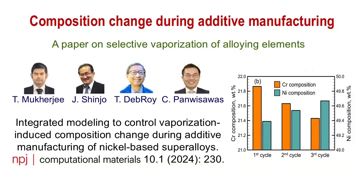During additive manufacturing, the chemical composition of a metallic part may be different from that of the feedstock from which the part is made. This is because the temperature of the fusion zone is very high and alloying elements vaporize from the fusion zone depending on their equilibrium vapor pressures. The equilibrium vapor pressure of an element depends on its concentration in a given alloy and temperature. The selective vaporization of the volatile alloying elements results in changes in the composition of the alloy.